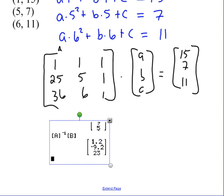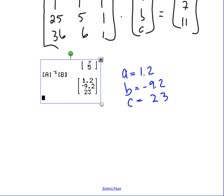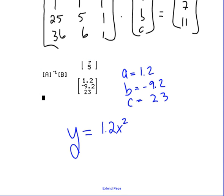So we can see A is 1.2, B is negative 9.2, and C is 23. So our quadratic equation is 1.2x squared minus 9.2x plus 23.